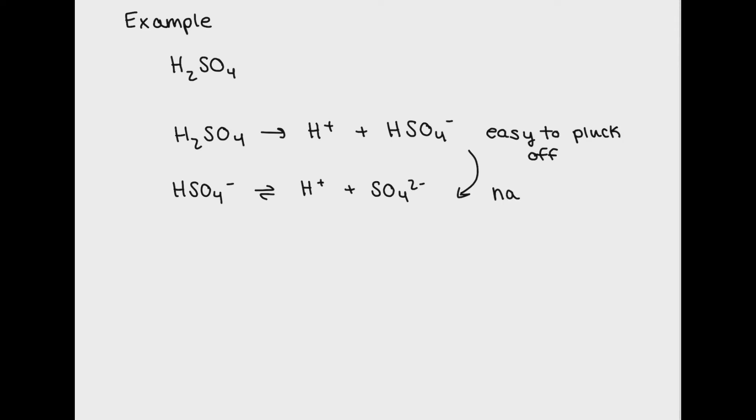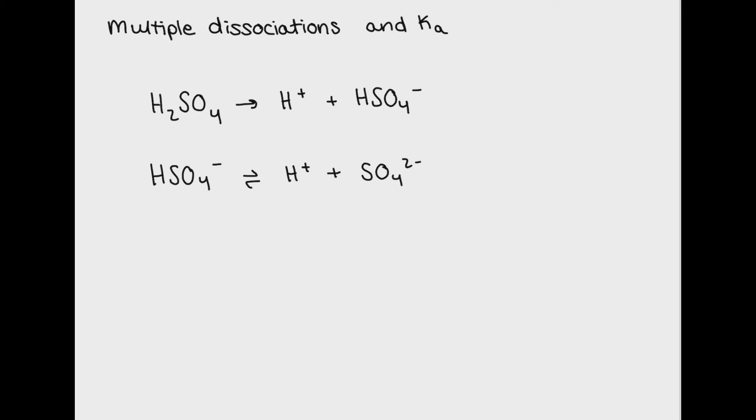However, because you've already plucked off one hydrogen, each successive hydrogen is going to be harder to pluck off. This means that the Ka value for each dissociation is going to get smaller, meaning the more hydrogens a polyprotic acid donates, the more the reactants are favored.